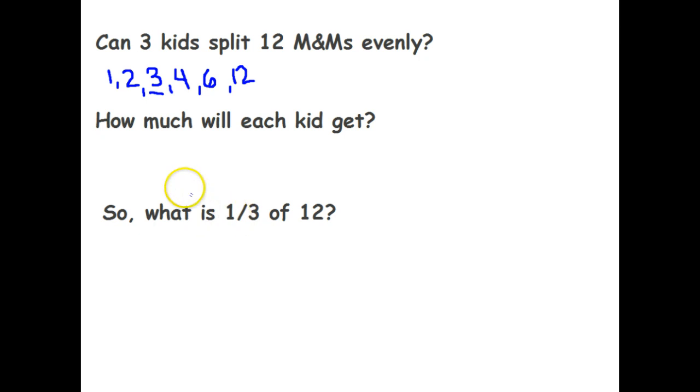How much will each kid get? Well, 12 divided by three equals four. So I could do it as a fraction and say, what's one-third of 12? Well, one-third of 12. Twelve times one is 12. Three times one is three. Twelve divided by three equals four. So there we go. Each kid gets four.